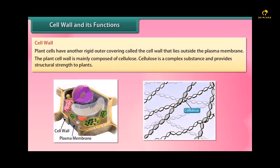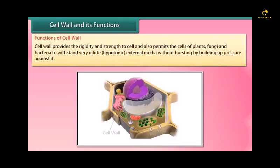Cellulose is a complex substance and provides structural strength to plants. Functions of cell wall: Cell wall provides the rigidity and strength to cell and also permits the cells of plants, fungi and bacteria to withstand very dilute hypotonic external media without bursting by building up pressure against it.